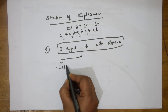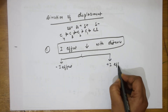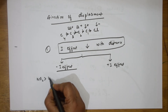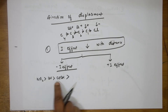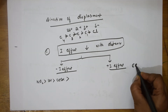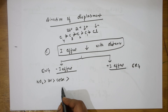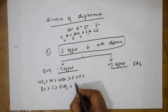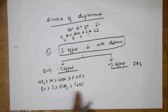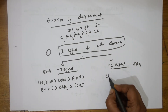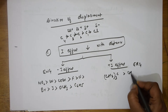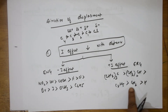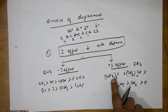The inductive effect is of two types: minus I effect and plus I effect. Groups with minus I effect are electron withdrawing groups, in decreasing order: NO2 > CN > COOH > F > Cl > Br > I > OCH3 > C6H5. Groups with plus I effect are electron releasing groups, in decreasing order: tertiary alkyl > secondary alkyl > C2H5 > CH3 > H.